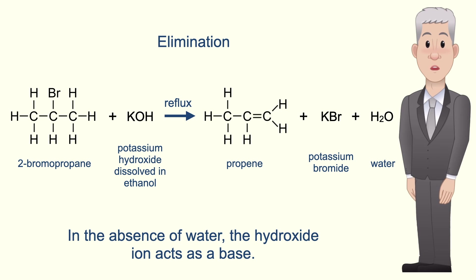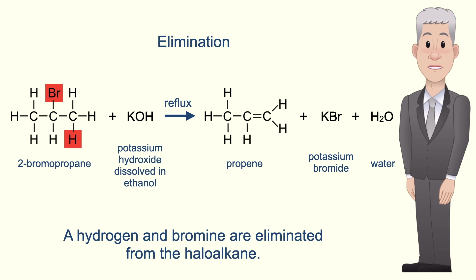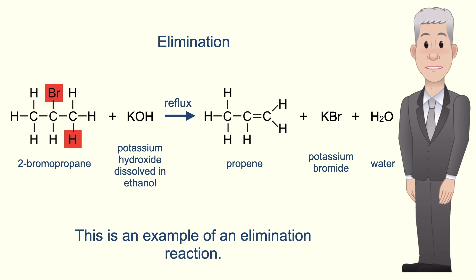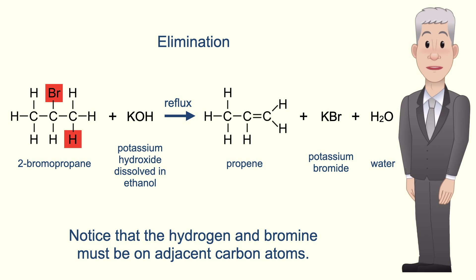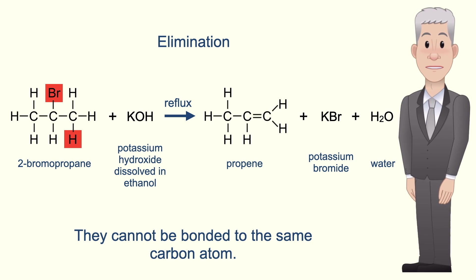In the absence of water the hydroxide ion acts as a base, and a hydrogen and bromine are eliminated from the haloalkane. So this is an example of an elimination reaction. Notice that the hydrogen and bromine must be on adjacent carbon atoms — they cannot be bonded to the same carbon atom.